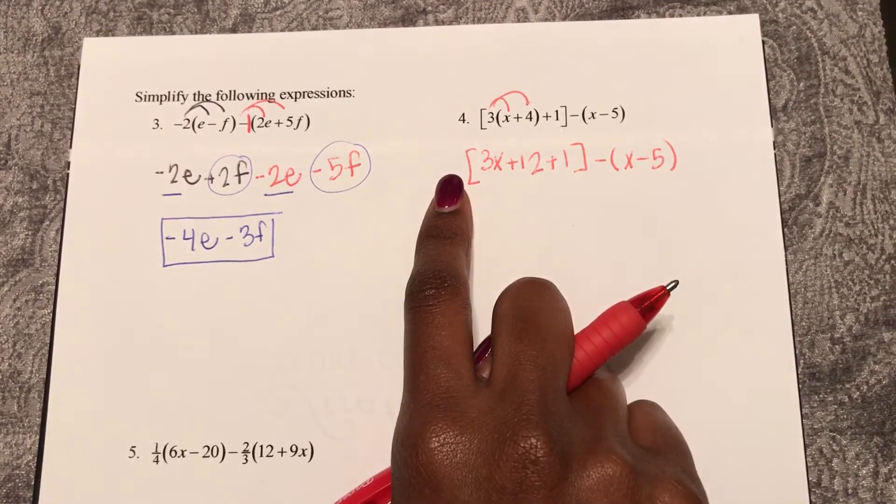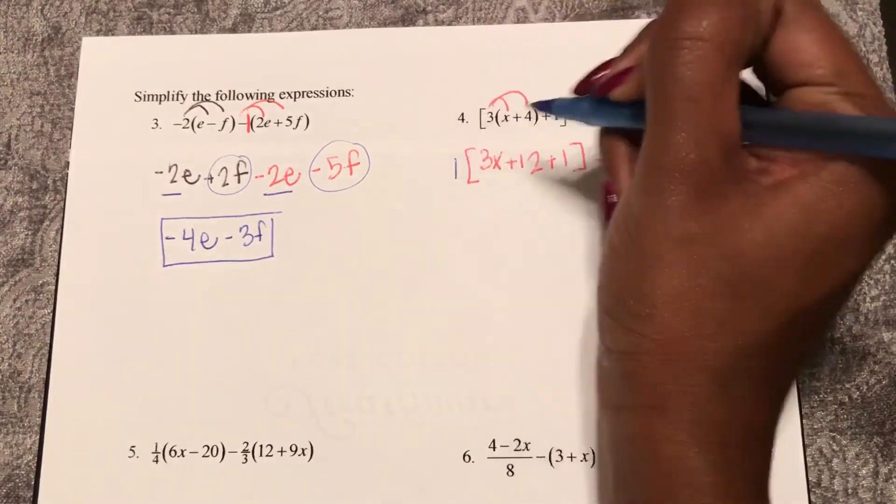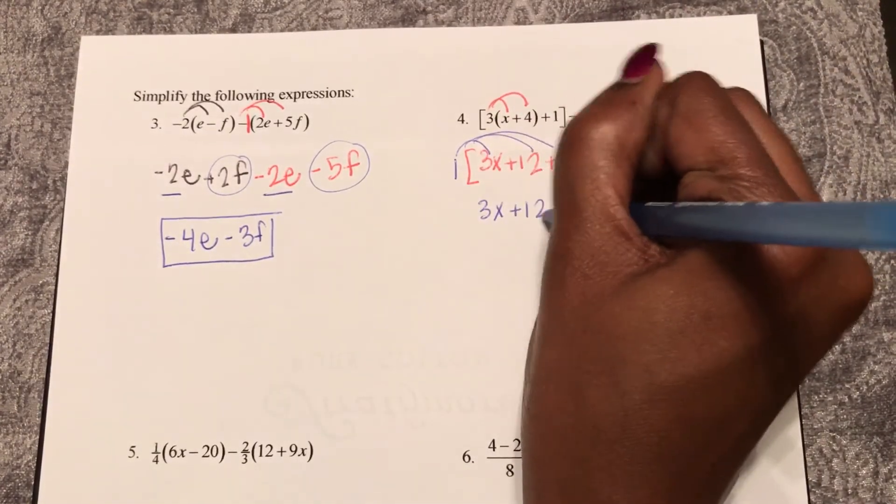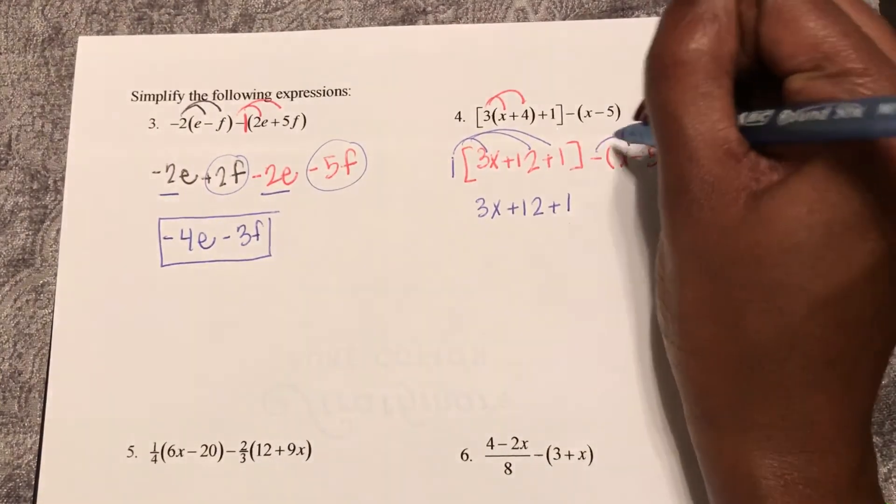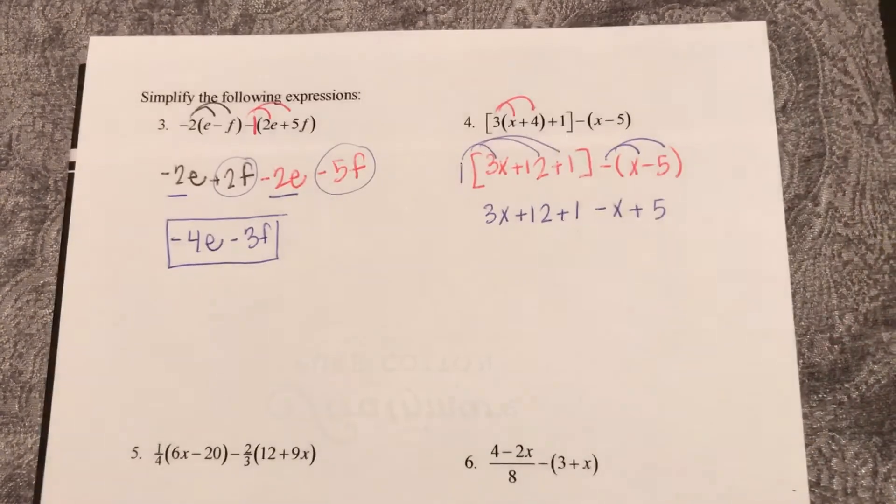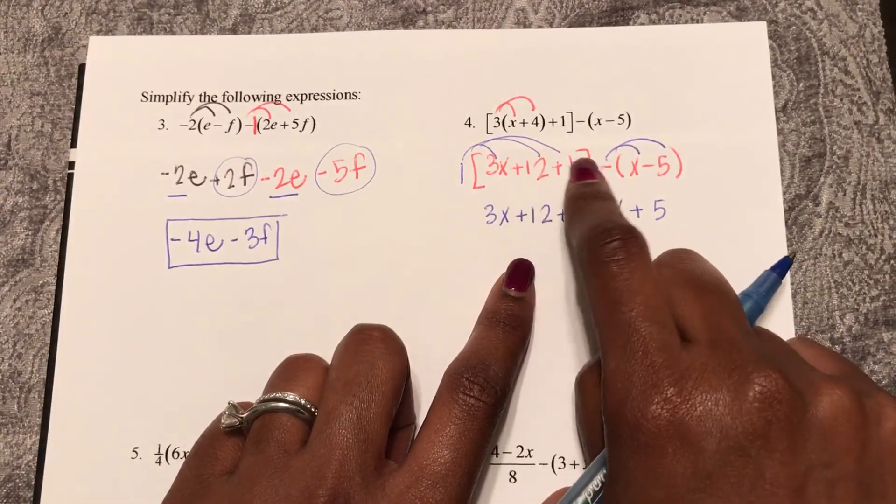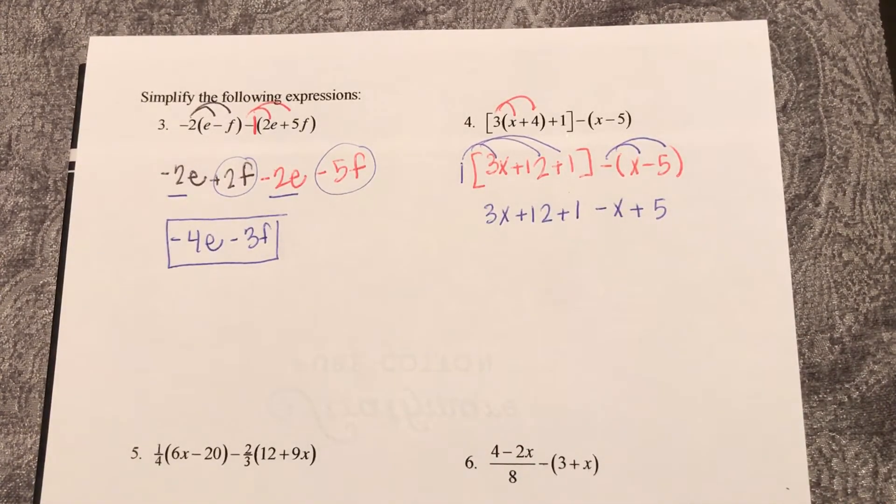So there is really a coefficient in front of these parentheses of 1. If I distribute that 1, I have 3x plus 12 plus 1. Now I will distribute this negative, and I get negative x plus 5. Now, you could have also already combined these like terms inside these parentheses. Actually, you probably should have, but it's okay. I'm going a little bit different process.